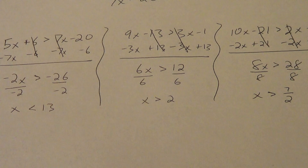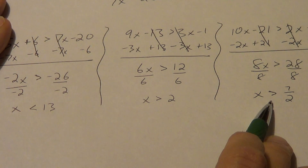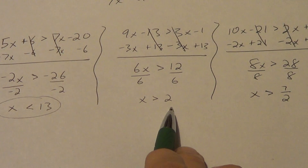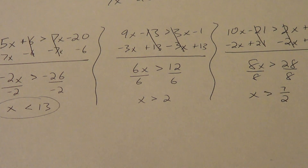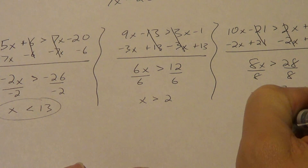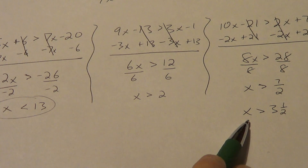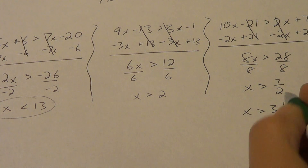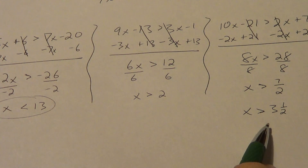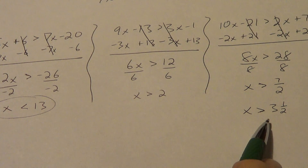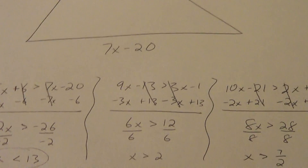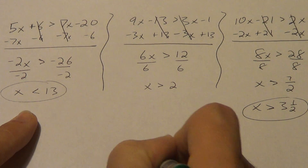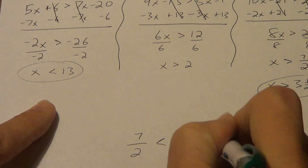We have three results: x is less than 13, x is greater than 2, and x is greater than 7 halves. The two greater thans are the same direction, so x less than 13 is part of the answer. Which is more restrictive — x greater than 2, or x greater than 3 and a half? X greater than 3 and a half, because 2.1 and 3 are allowed by the other rule but not this one. So we use x greater than 7 halves and x less than 13. Final answer: 7 halves is less than x is less than 13.